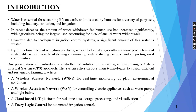Introduction. Water is an essential element for sustaining life on earth and it is used by human beings for a variety of purposes including industry, sanitation and irrigation. In recent decades, the amount of water withdrawn for human use has increased significantly with agriculture being the largest user, accounting for 69% of annual water withdrawals. Due to inadequate irrigation control systems, a significant amount of this water is wasted. By promoting efficient irrigation practices, we can help make agriculture a more productive and sustainable sector capable of driving economic growth, reducing poverty and supporting rural communities.